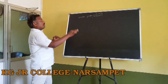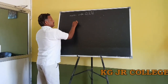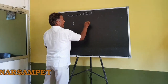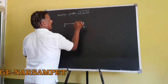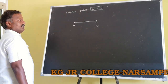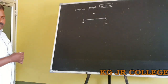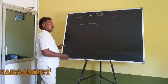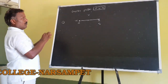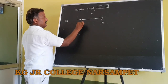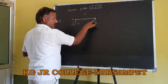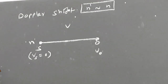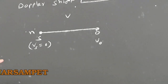Today we discuss another case: source is at rest, and an observer is moving with velocity V naught. The velocity of sound is V and the frequency of source is N. Since the source is at rest, Vs equals zero. Observer is moving with velocity V naught. Lambda is the wavelength of sound.